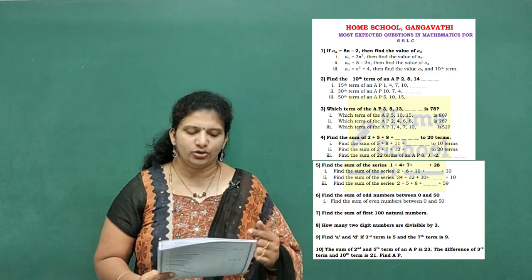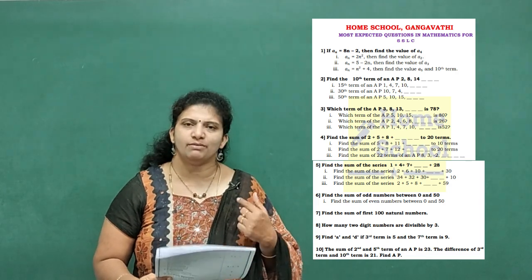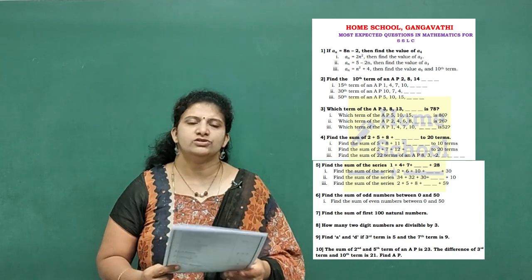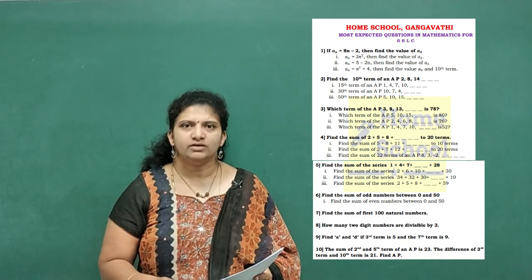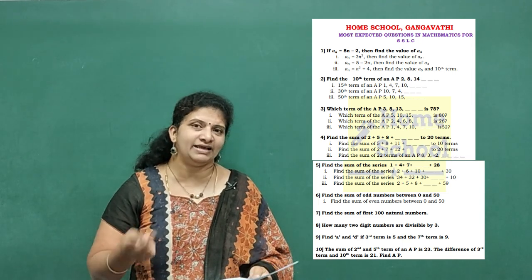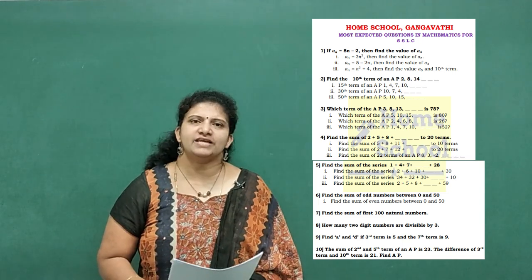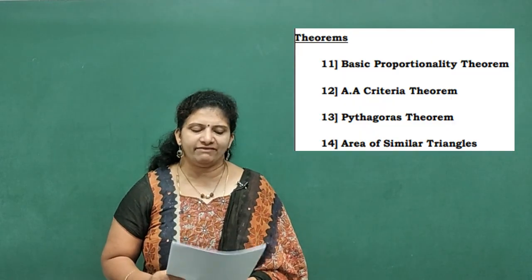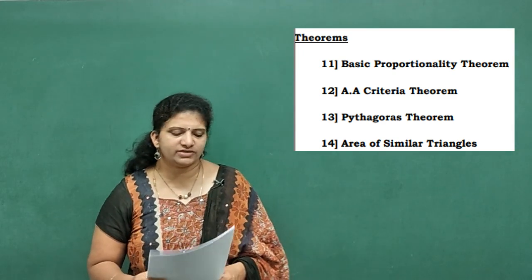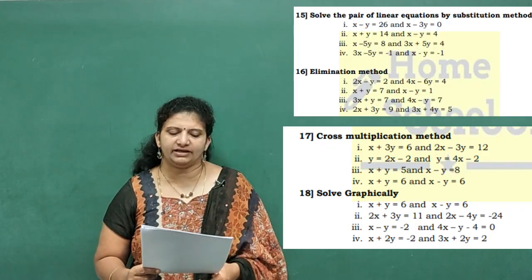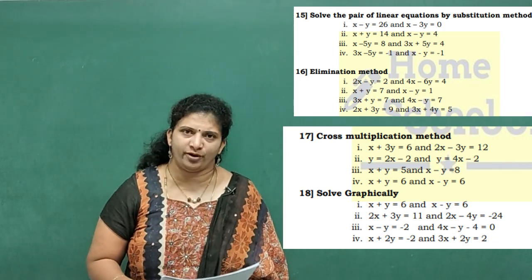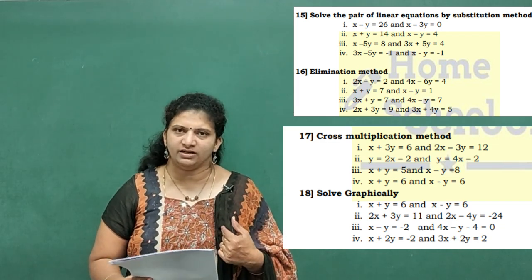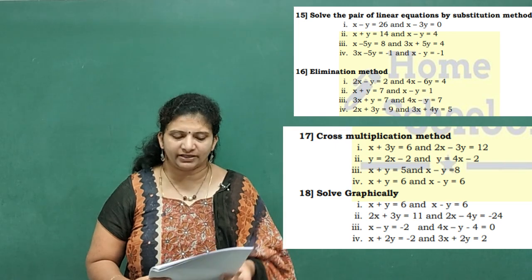For Arithmetic Progression — nth term, sum of n terms, or finding any terms given 'a' and 'd' — I have given you 10 problems. Next chapter Triangles — I have given four very important theorems: problems 11, 12, 13, 14. Problems 15, 16, 17, 18 cover each main method: substitution, elimination, cross multiplication, and solve graphically. If you practice all these, you will be perfect with the third chapter.